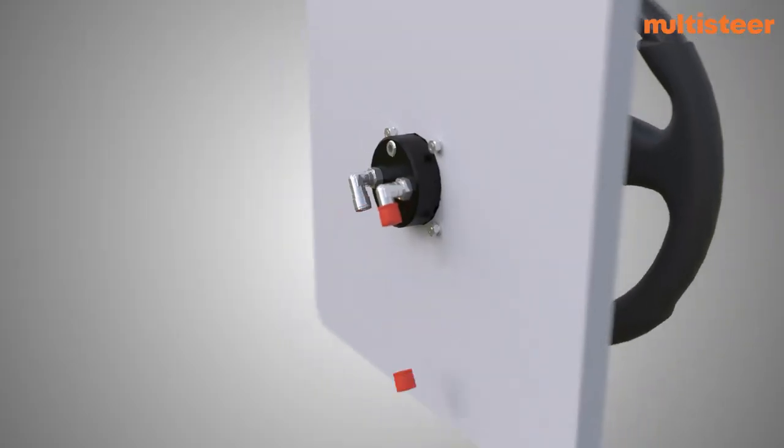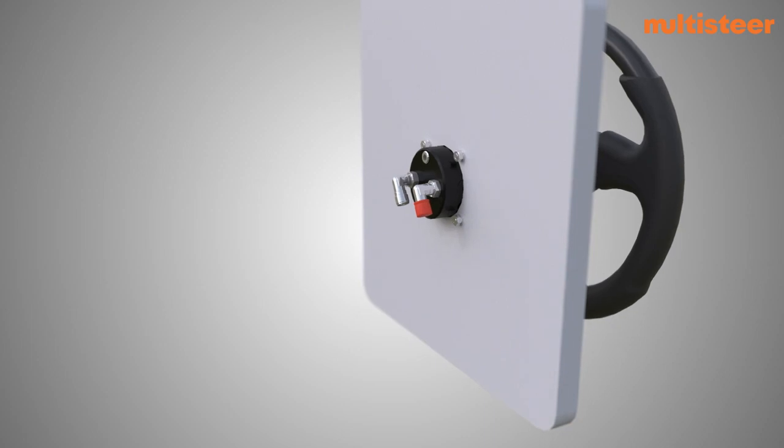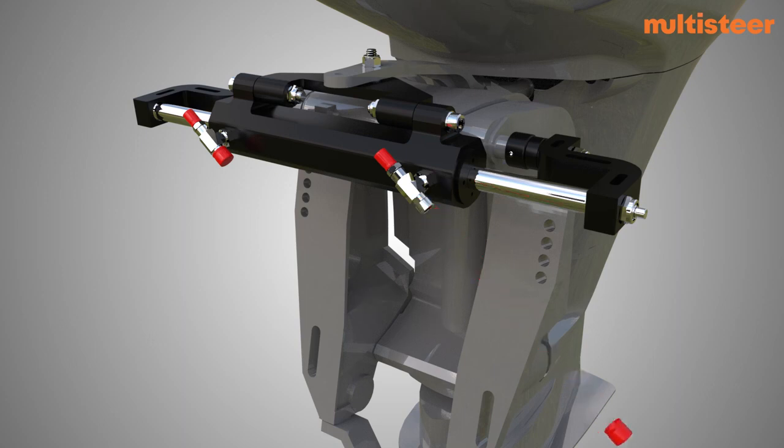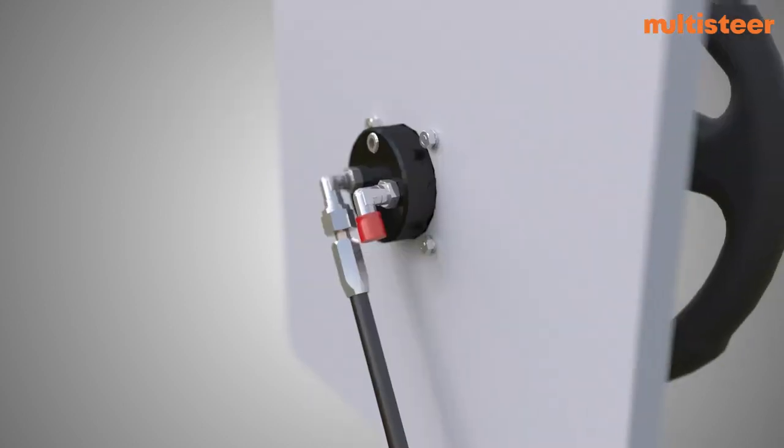Remove the thread protector cap from the starboard side of the elbow of helm and insert the hose fitting into it. Tighten the hex nut on the hose fitting. Remove the thread protector cap from port side T fitting of cylinder and insert the hose fitting into it. Tighten the hex nut on the hose fitting.